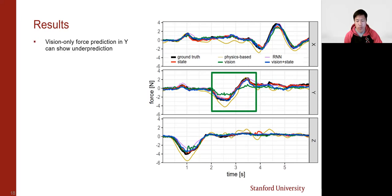For the vision-only model, the force prediction in the y-axis shows some under prediction. This is likely because the depth information in the direction is low, especially since we only use monocular images.